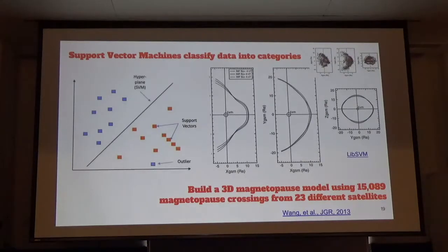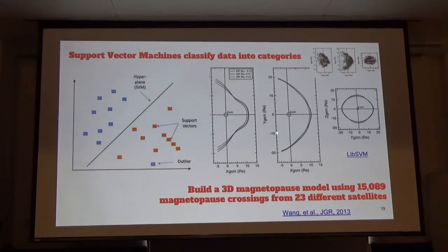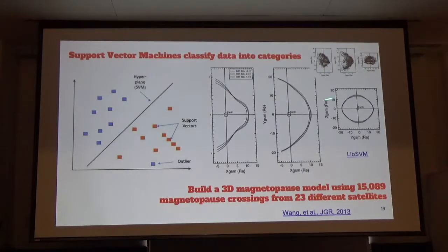The second example is support vector machines — a type of supervised classification learning algorithm that creates hyperplanes to separate your data. For this example, they're creating a 3D model of the magnetopause. You have points that are magnetopause crossings and points that aren't, and you draw a line that best separates the data — the hyperplane for multidimensional data. They created a model taking into account dipole tilt, solar wind dynamic pressure, and IMF-Bz. Here you can see indentations due to the polar cusps and a deformation in the Z-Y plane that analytical models assuming axial symmetry wouldn't necessarily capture.